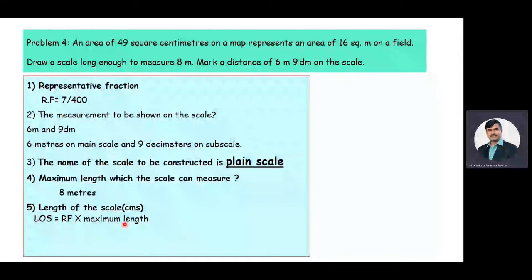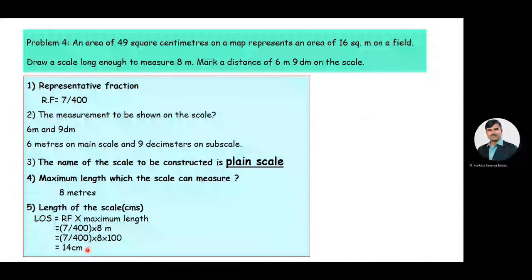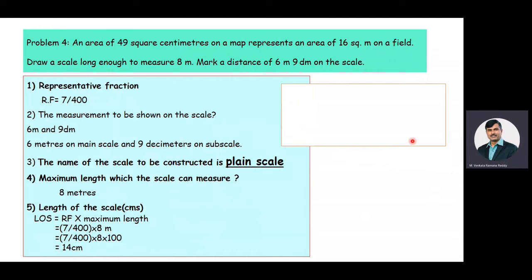The length of the scale equals RF multiplied by maximum length. The RF value is 7/400 and the maximum length is 8 meters. Since 1 meter equals 100 centimeters, the length of the scale is 7/400 × 8 × 100 = 14 centimeters. With 14 centimeters as the length of the scale, we are going to construct the plane scale.